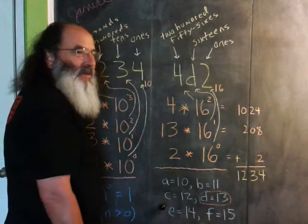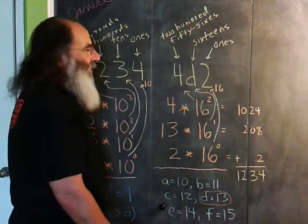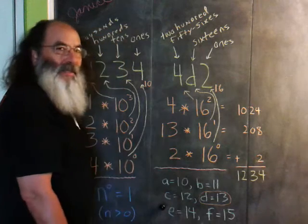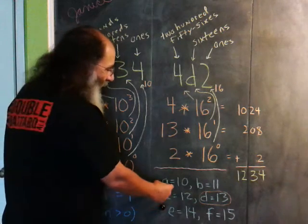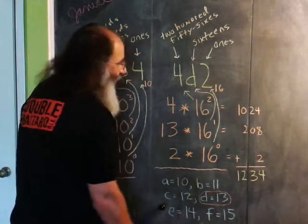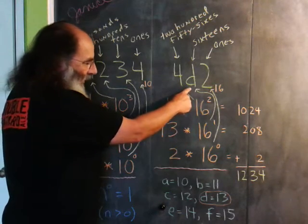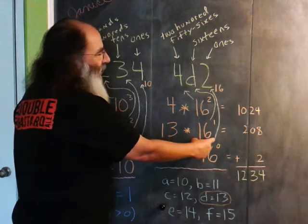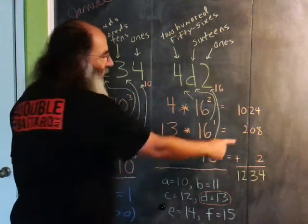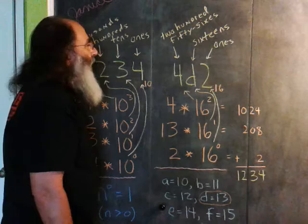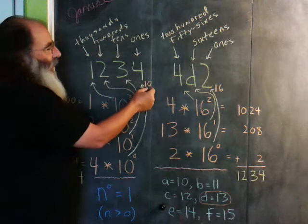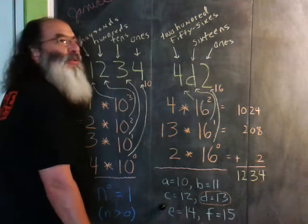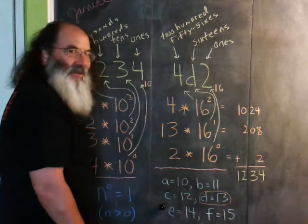In the hexadecimal number system, there are 16 digits, 0 through 9. But then they resort to using letters to represent the other digits. A would be 10, B is 11. In this case, the D is 13. So that's why we have 13 units of 16, which comes out to be 208. So, 1,234 in base 10 is equal to 4D2 in base 16.